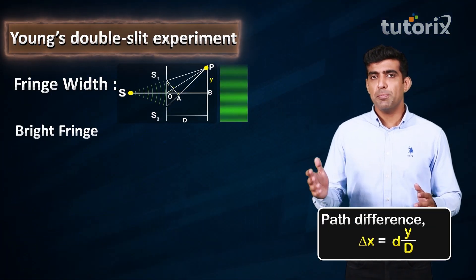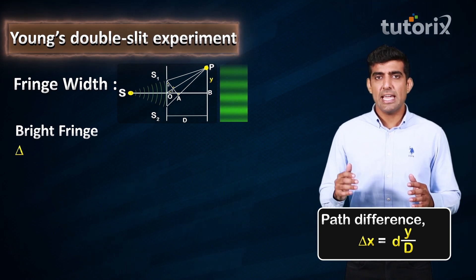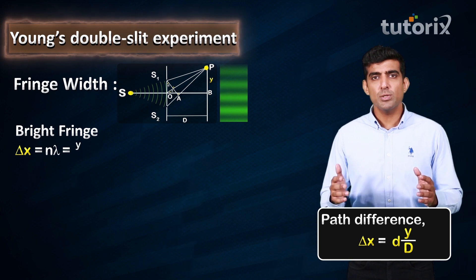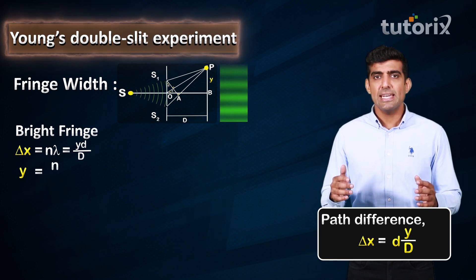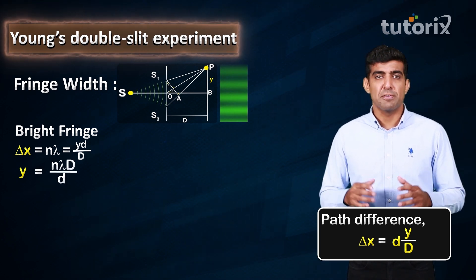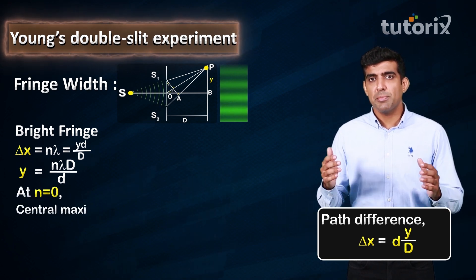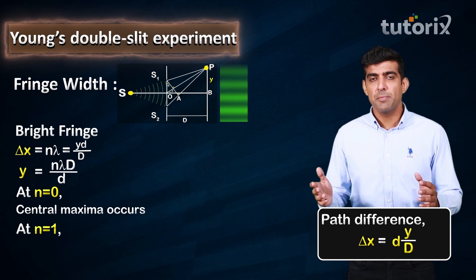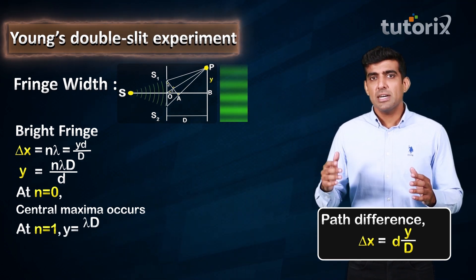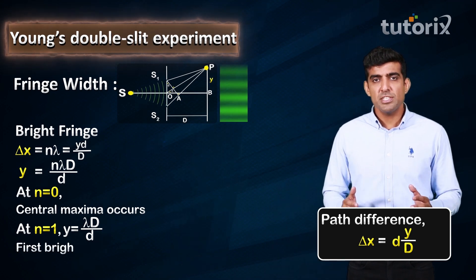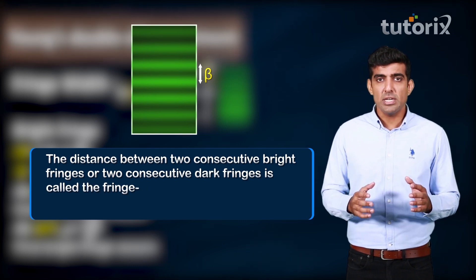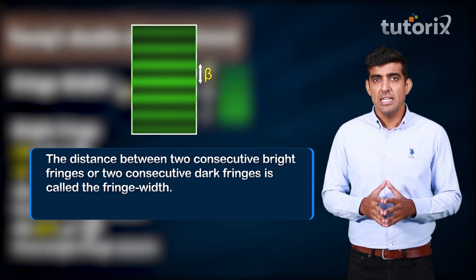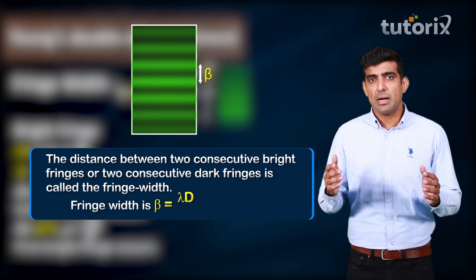For a bright fringe, the path length difference delta X = n·lambda = y·d/D. Therefore, y = n·lambda·D/d. When n = 0, the central maxima occurs. When n = 1, y = lambda·D/d, which is the first bright fringe. The distance between two consecutive bright fringes or two consecutive dark fringes is called the fringe width. In this case, the fringe width can be written as lambda·D/d.